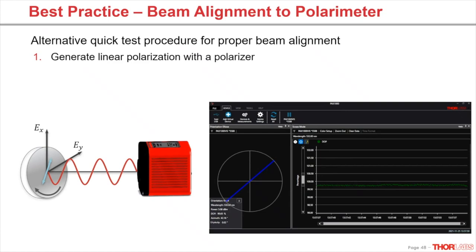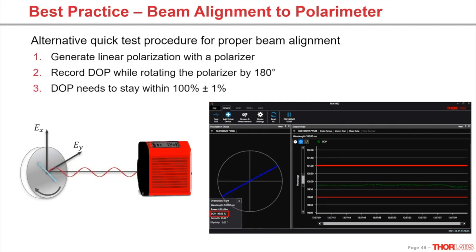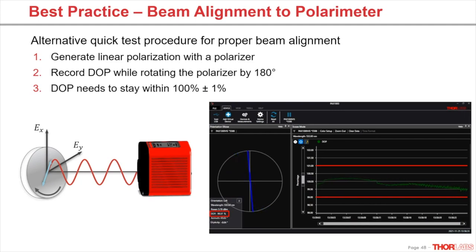There is an alternative testing procedure to check the proper alignment. You can place a rotatable linear polarizer in front of the polarimeter. For a sufficiently aligned laser beam, the degree of polarization should not change more than plus/minus 1% while turning this polarizer by 180 degrees. In the animation, you can see the polarizer rotating. We are rotating this linear polarized light and see that the degree of polarization stays within the borders of plus/minus 1%.